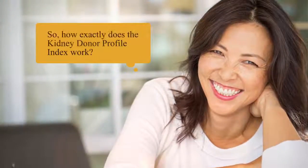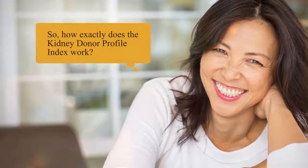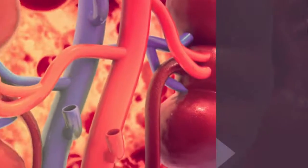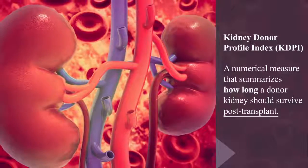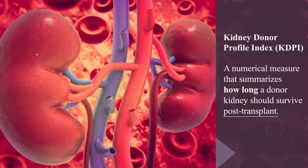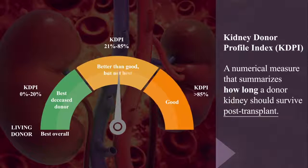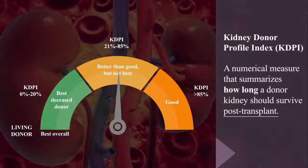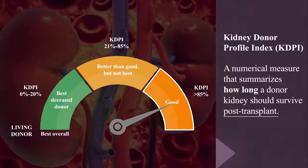How exactly does the Kidney Donor Profile Index work? The Kidney Donor Profile Index is a numerical measure that summarizes, into a single number, how long a donor kidney should survive post-transplant. Every deceased donor kidney is given a KDPI score ranging from 0 to 100%, where the lower the value, the better the post-transplant survival longevity.